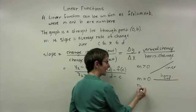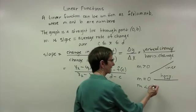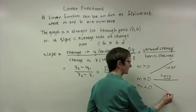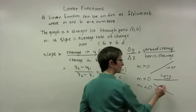If the slope is negative, m is less than zero, again reading from left to right, it goes down, so it decreases.